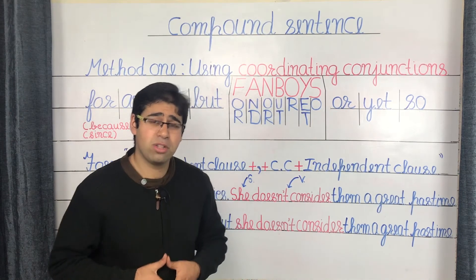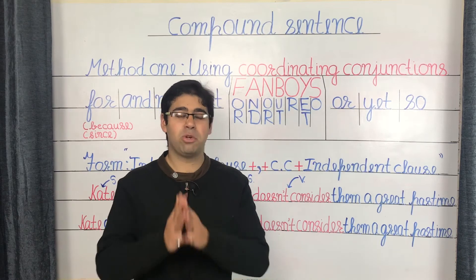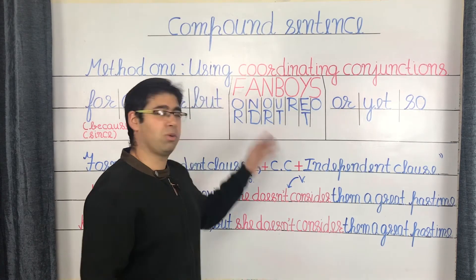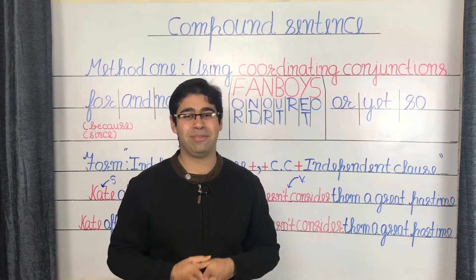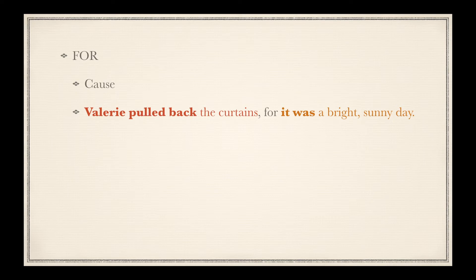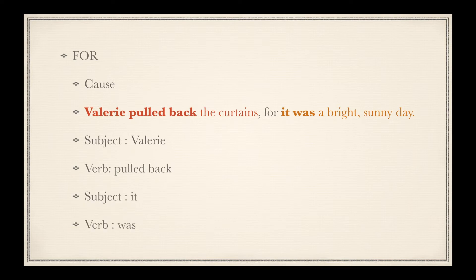Let's reinforce this concept with seven examples using each coordinating conjunction. Starting with for — the conjunction for is the equivalent of because and indicates cause. So we have: 'Valerie pulled back the curtains, for it was a bright sunny day.' Valerie is the subject of the first independent clause, and pulled back serves as the verb; for the second, it and was serve as the subject and verb respectively.